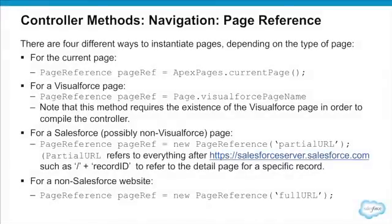Here are a few ways to create page references. The first is using the ApexPages class, which has a method called CurrentPage. If you want to obtain a reference to the current — in other words, the called VisualForce page — you can do ApexPages.CurrentPage, and you now have an instantiated page reference for that.